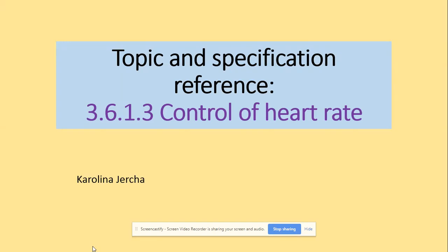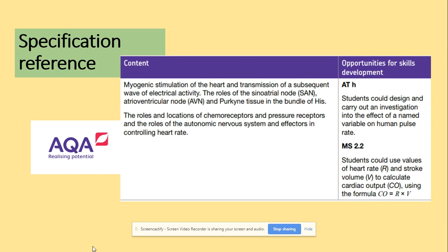Hi guys, welcome to the control of the heart rate. In terms of the specification, we will be looking at the wave of electrical activity and the role of the SAN, AVN and the bundle of His. You also need to be aware of the chemoreceptors and pressure receptors in terms of their location and function, and we will be looking at the two divisions of the autonomic nervous system that affect and control the heart rate.